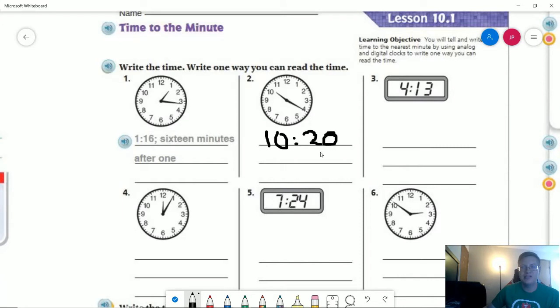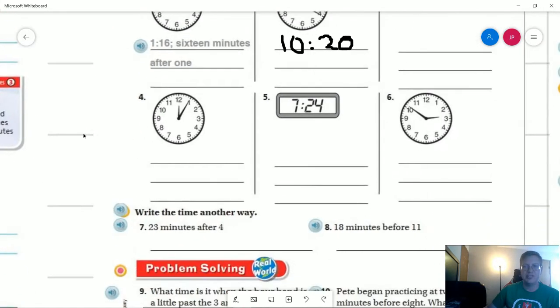One way that we can write the time is to say 20 minutes after 10, or if we wanted to do 60 minus 20, we could say that it is also 5, 10, 15, 20, 25, 30, 35, 40 minutes before 11. So those are the two different ways that we could read the time for that.